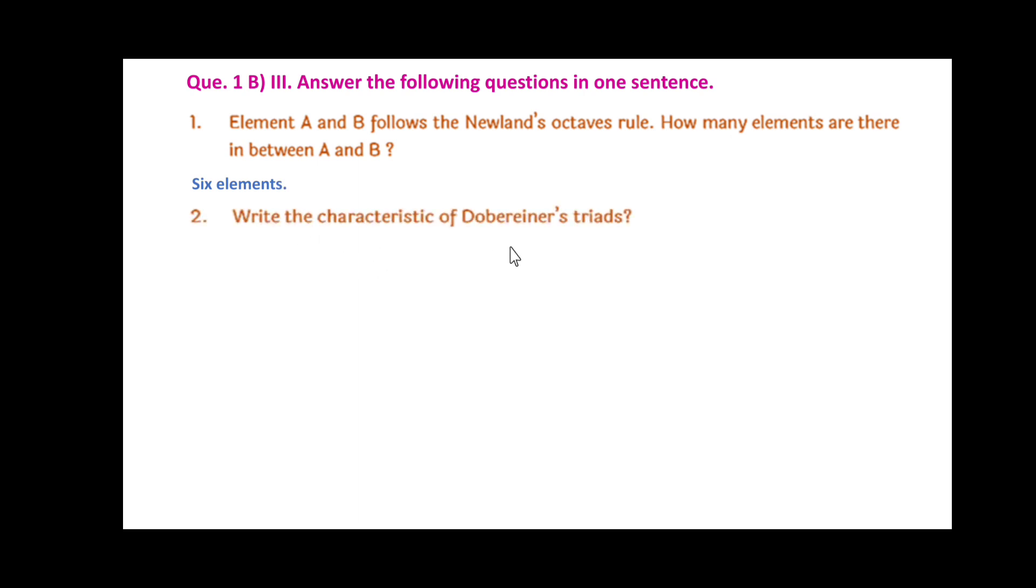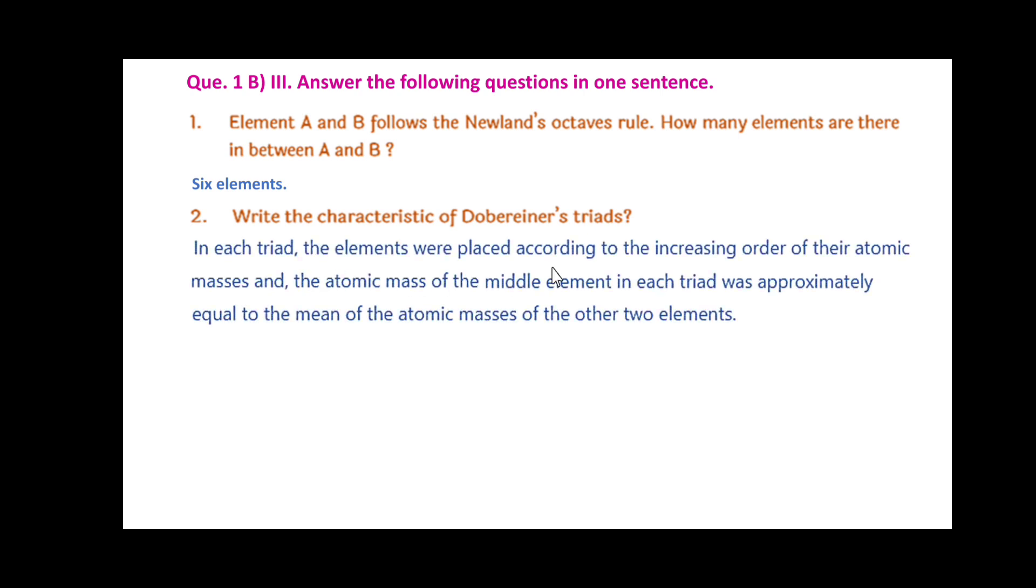Write the characteristics of Dobereiner's triads. In each triad, the elements were placed according to increasing order of their atomic masses, and the atomic mass of the middle element in each triad was approximately equal to the mean of the atomic masses of the other two elements. Question 3: To which element does Newland's octave rule apply? Up to calcium.